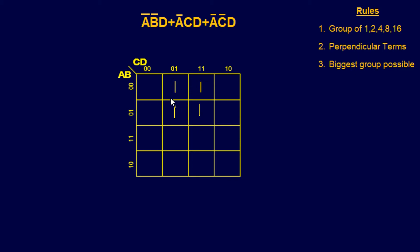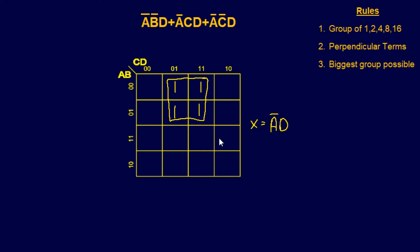Looking at the K-map, I have a simple group of four that are perpendicular to each other, and it's the biggest group possible since it literally covers all the variables. For this group of four: B has a contradicting input B-not and B, so they cancel each other out. C-not and C also cancel each other out. So we're left with A-not and D. The final answer is A-not·D.